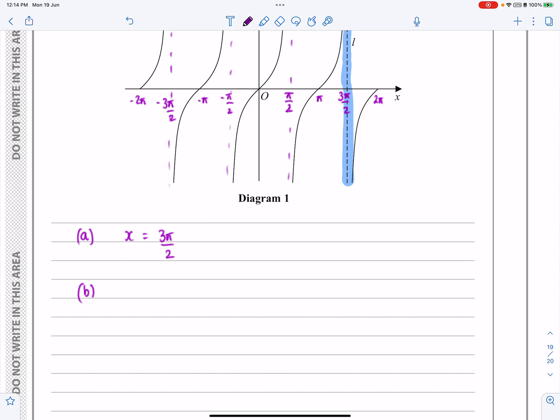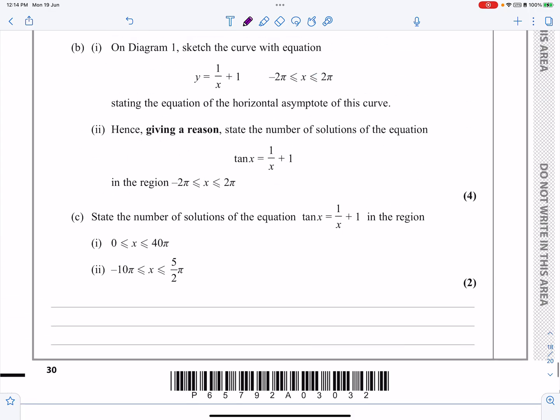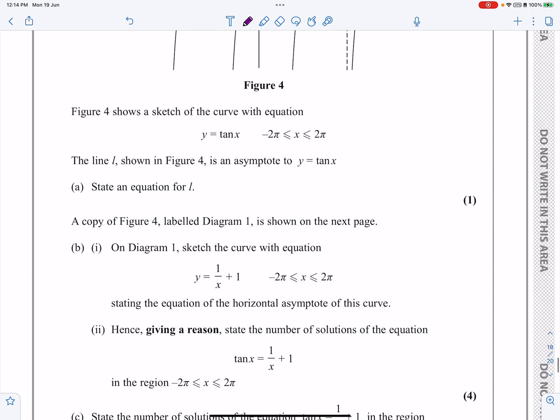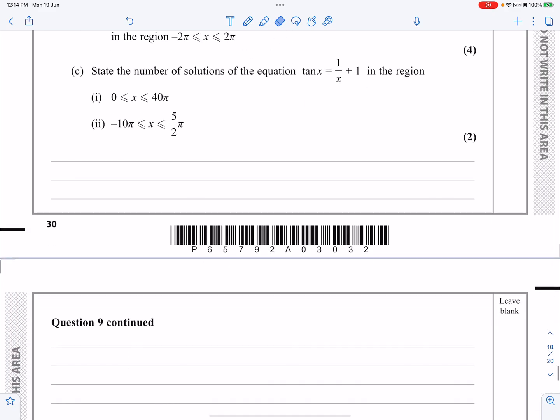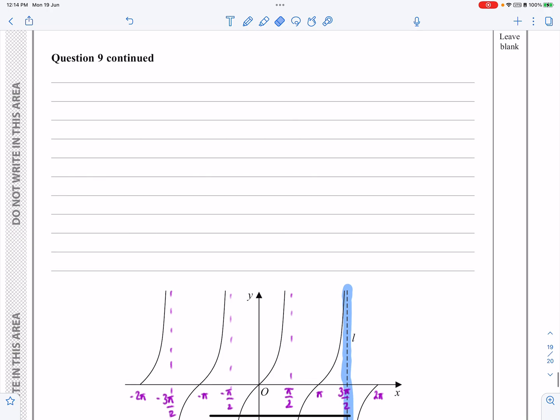Then part B. Part B says they want us to sketch y equals 1 over x plus 1 and state the equation of the horizontal asymptote. And then they want to know where does tan x and 1 over x plus 1, where do they meet, how many solutions are there? But let's just quickly talk about what 1 over x plus 1 would look like. I'll do it up here.